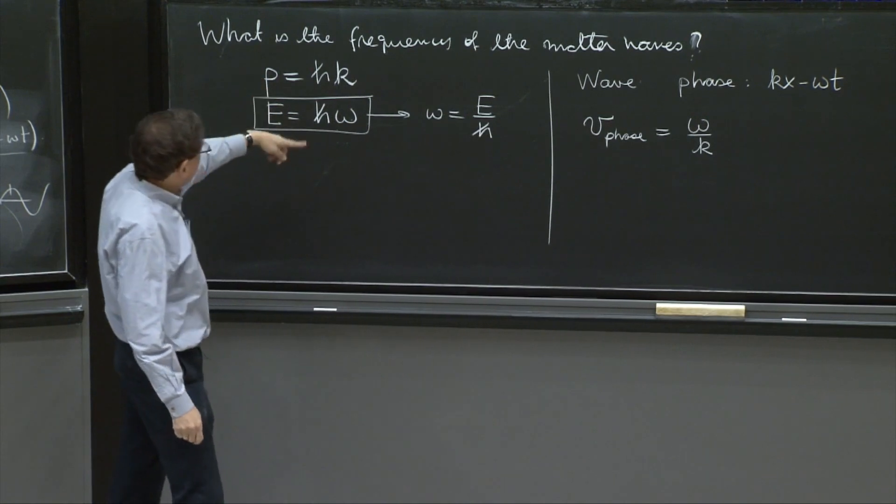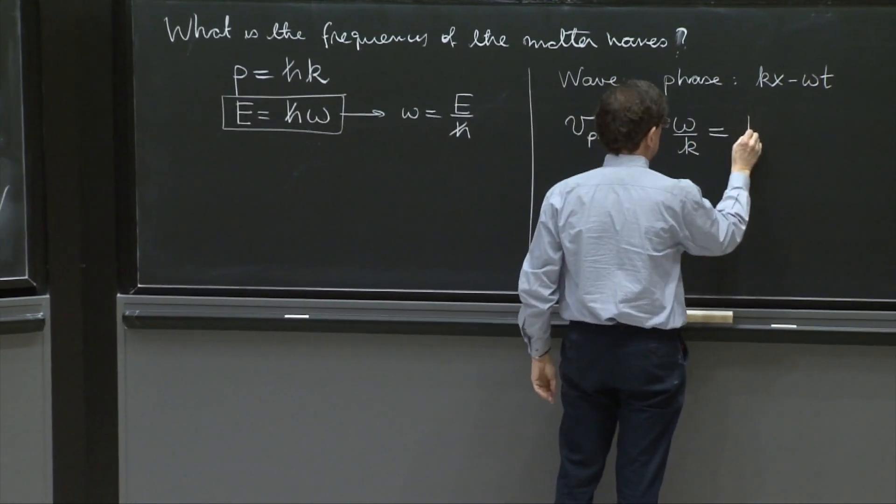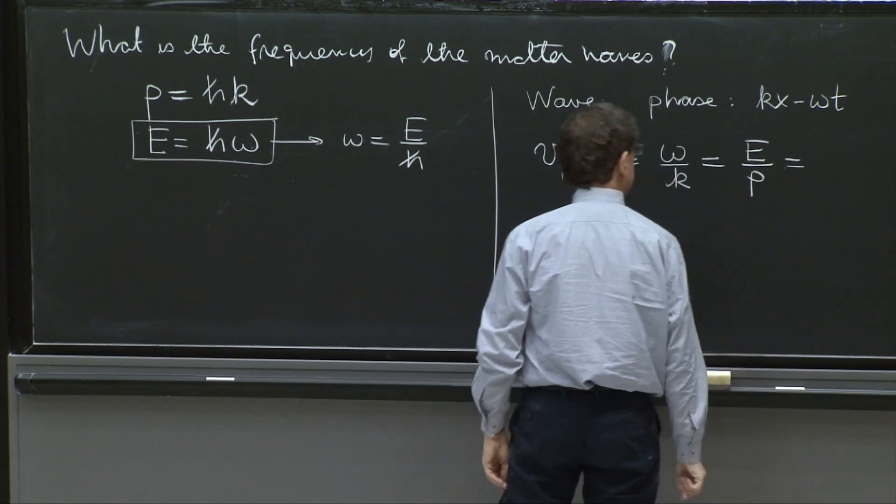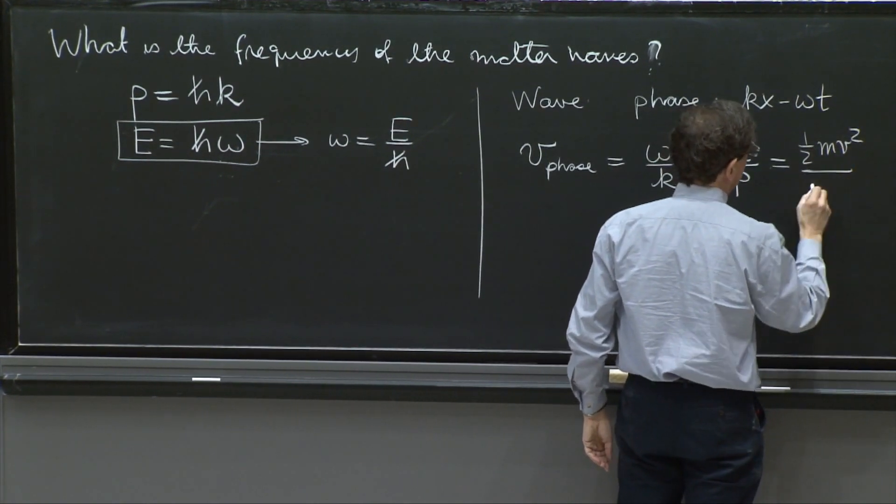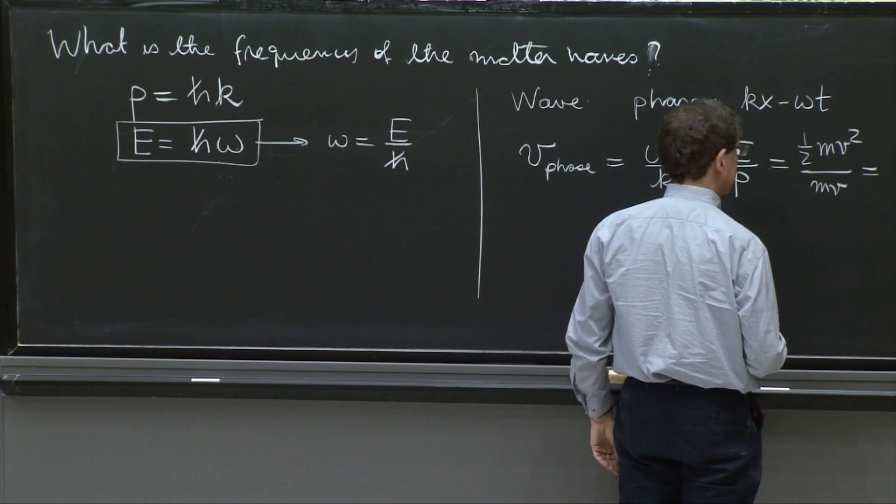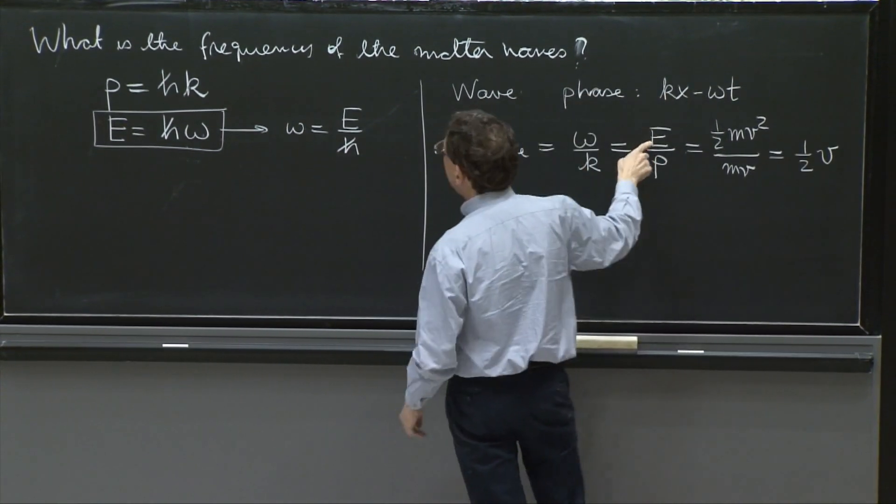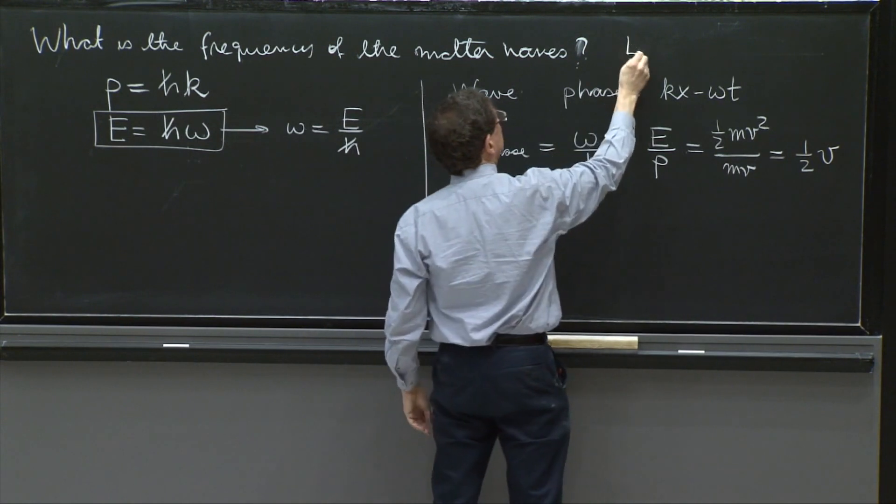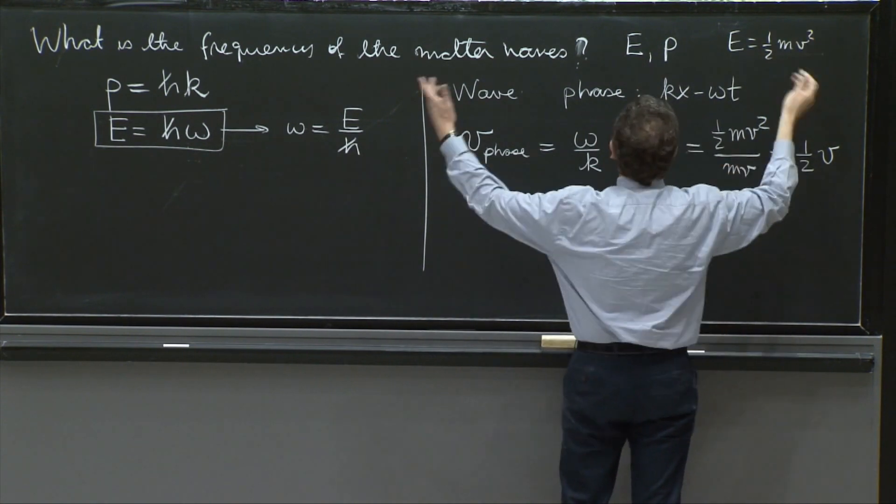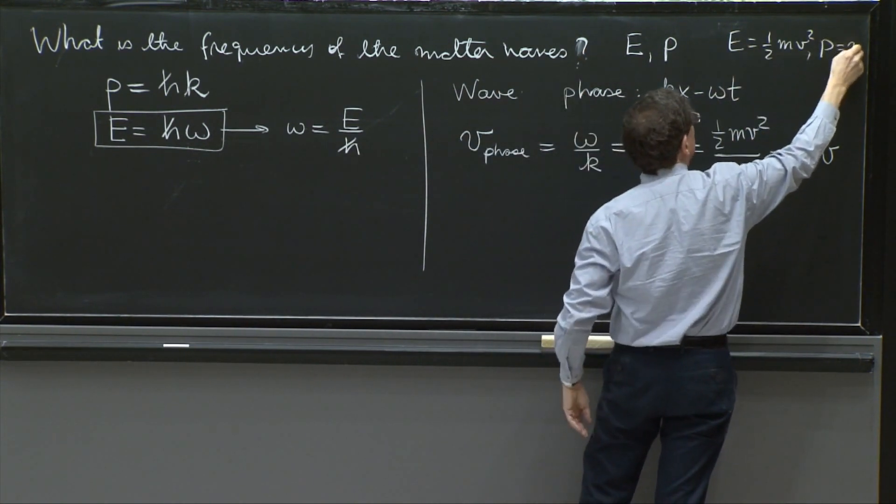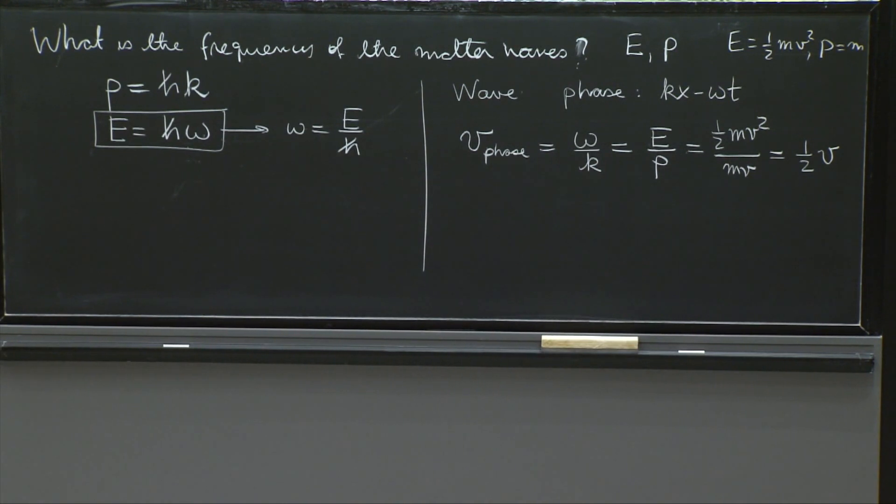So let's see if this makes some sense. Omega over k is the same thing as E over p. We're non-relativistic, so let's continue: 1 half mv squared over mv. And this seems a little strange, 1 half v. So if I have a particle, this is matter waves of energy E and momentum p. And E is 1 half mv squared. The velocity of the particle p is equal to mv. And now somehow this wave seems to be moving with half the speed of the particle. And that looks pretty bad.